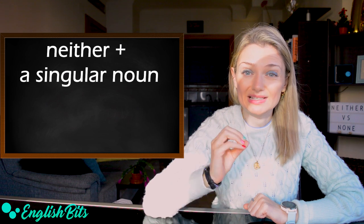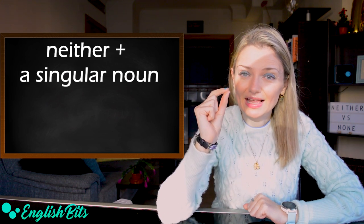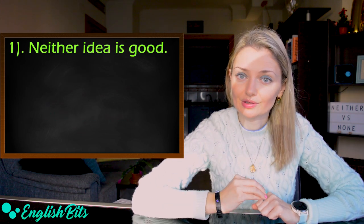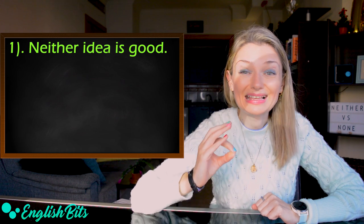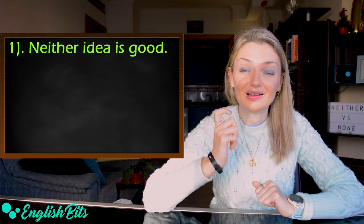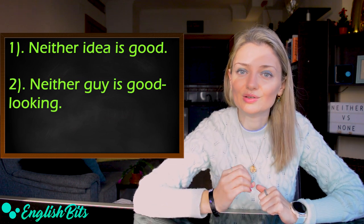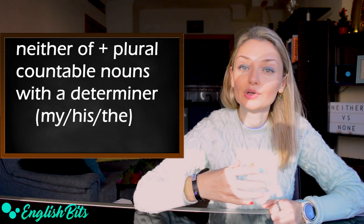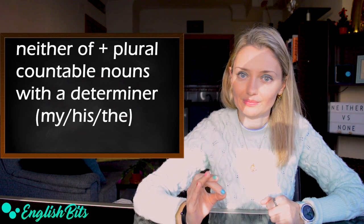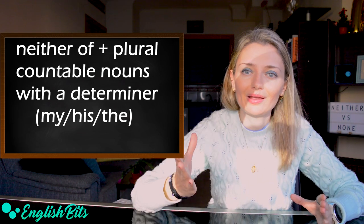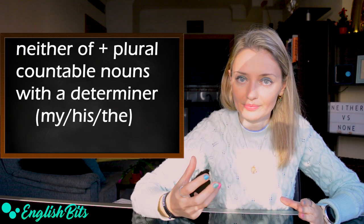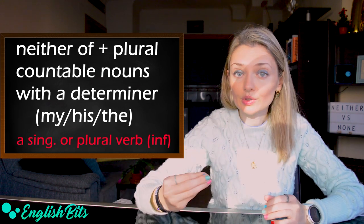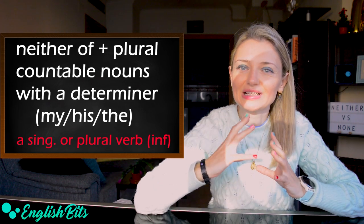After neither, we can use a singular noun and in this case it takes a singular verb. For example, neither idea is good. In this case, we can only say is good and not are. And one more example here: neither guy is good looking. We can also say neither of followed by plural countable nouns with a determiner, for example, his, her, my or the definite article the. And once again, we can use both a singular or plural verb. Plural is informal.